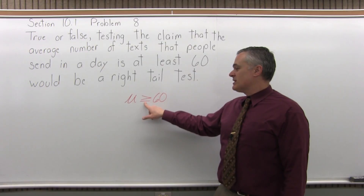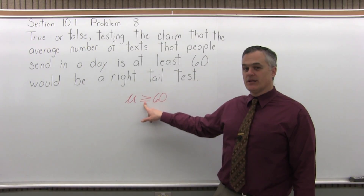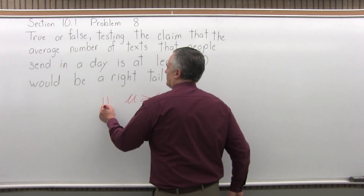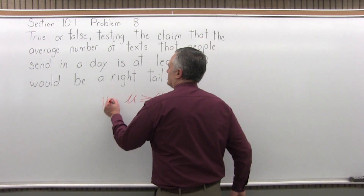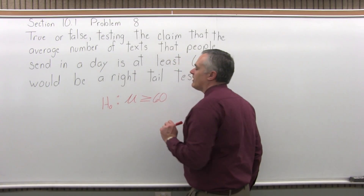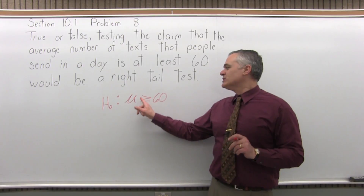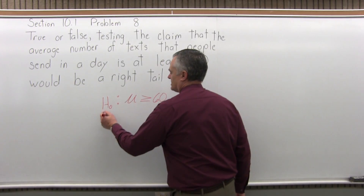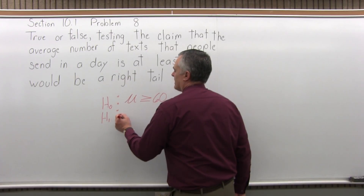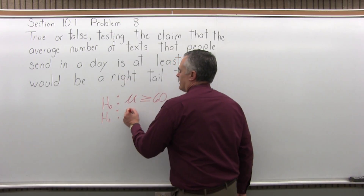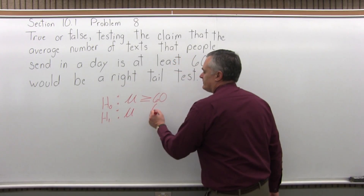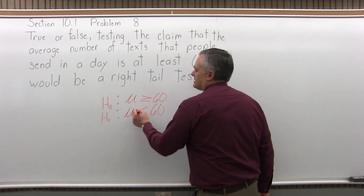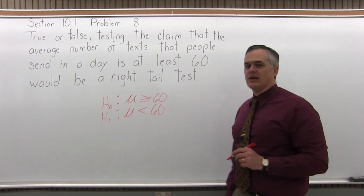If my statement contains the condition of equality, it must be the null hypothesis. It's the null that contains the condition of equality. So this is my null hypothesis: mu is greater than or equal to 60. Which means the alternate hypothesis would be the opposite — H₁ — that mu is less than 60.